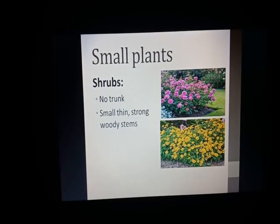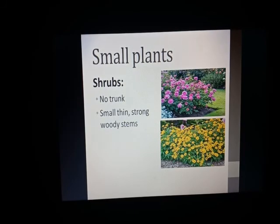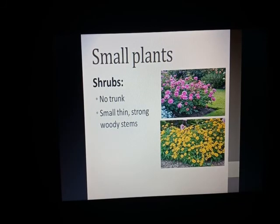The second type are small plants. The first kind of small plant is the shrub. Shrubs do not have a main trunk like trees. Instead, they have many small, thin but strong woody stems from which they grow further.